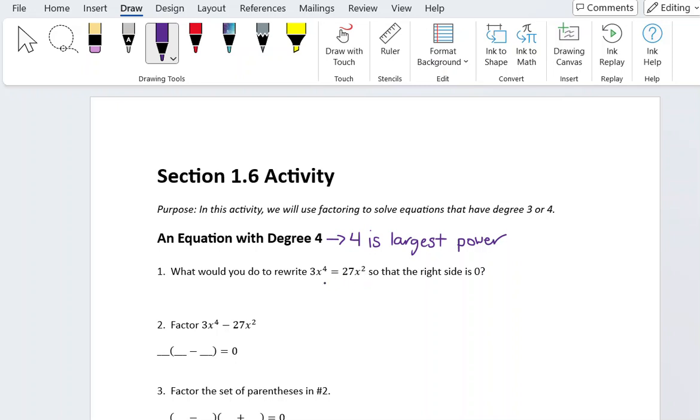What we want to do first is rewrite it so that the right side is 0. So in order to do that, I would subtract 27x squared from both sides to move the 27x squared to the left side. That leaves me with 3x to the fourth minus 27x squared equals 0.